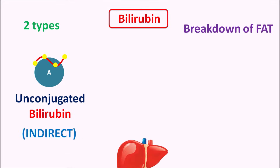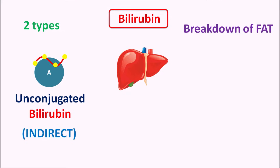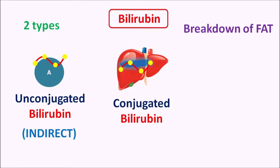The second form of bilirubin is present within the liver, where it is conjugated with sugars by glycosidic linkage to produce a water soluble form called conjugated bilirubin. This conjugated bilirubin is responsible for digestion of fatty material within the food, which is why it is called direct bilirubin. In this way, these two forms exist within the body.